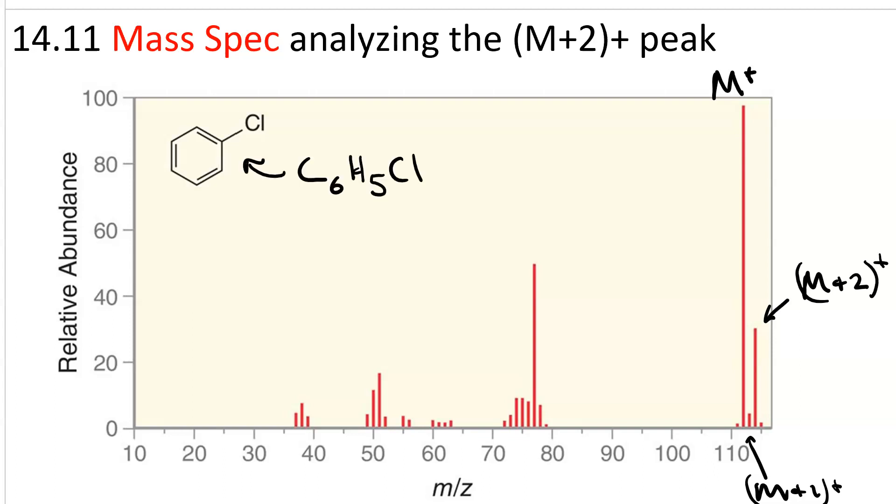The chemical formula for chlorobenzene is C6H5Cl. We'd expect our M plus peak to be 6 times 12 for the carbon, plus 5 times 1 for the hydrogen, plus 35, which is 112, just as expected. And the M plus 1 peak is from carbon-13.